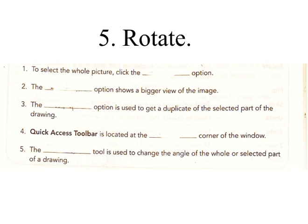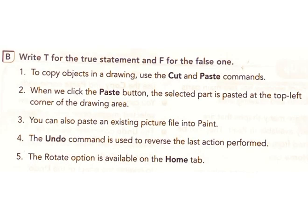B. Write T for true statement and F for false one. 1. To copy objects in a drawing, use the cut and paste commands. Answer: False. 2. When we click the paste button, the selected part is pasted at the top left corner of the drawing area. Answer: True.